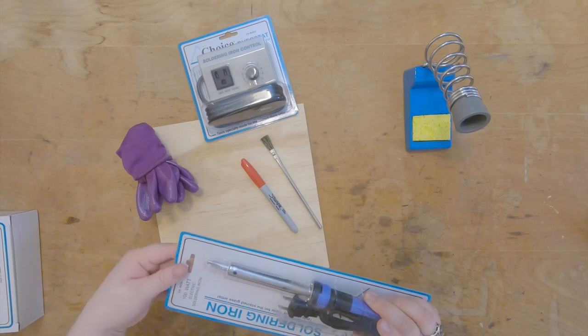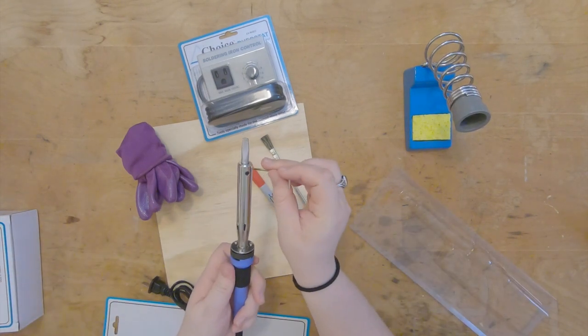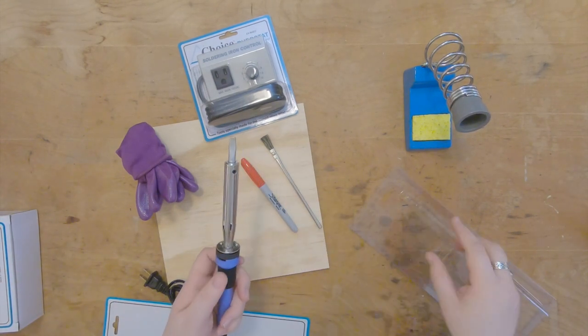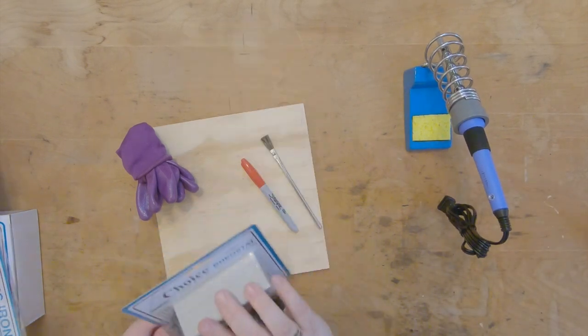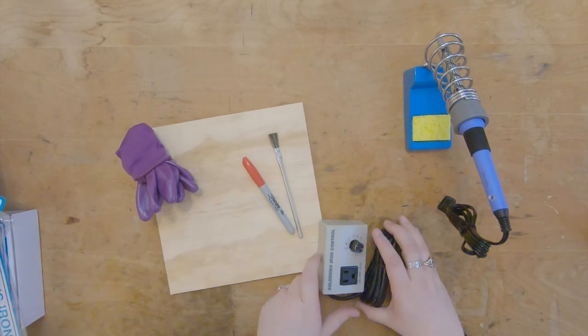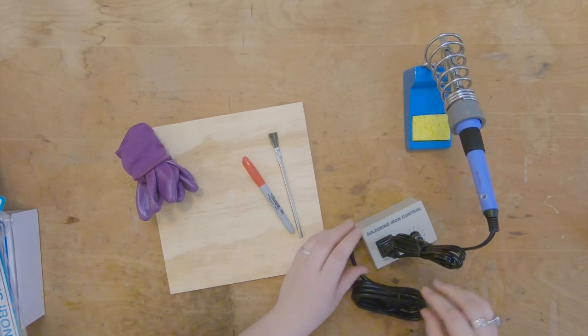Then we have our soldering iron. This wrench is for taking off the tip and replacing the tip when needed. We're gonna place this in our soldering iron stand. This is our rheostat. Our iron plugs into here and then we plug this into the wall.